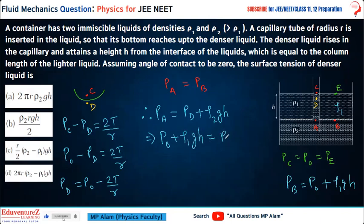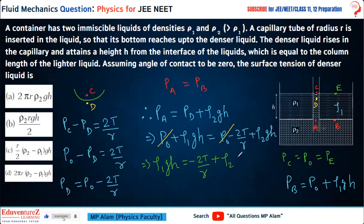So substituting: PA equals P0 plus rho 1 × g × H, and in place of PD we write P0 minus 2T/R plus rho 2 × g × H. Now P0 cancels from both sides, and what remains on one side is rho 1 × g × H and on the other side is minus 2T/R plus rho 2 × g × H.